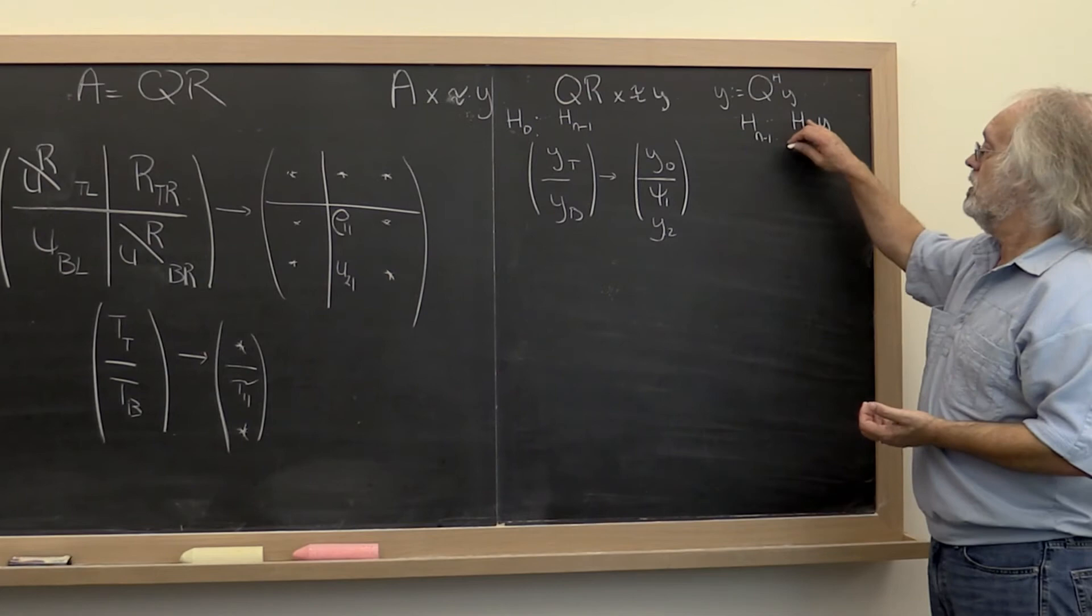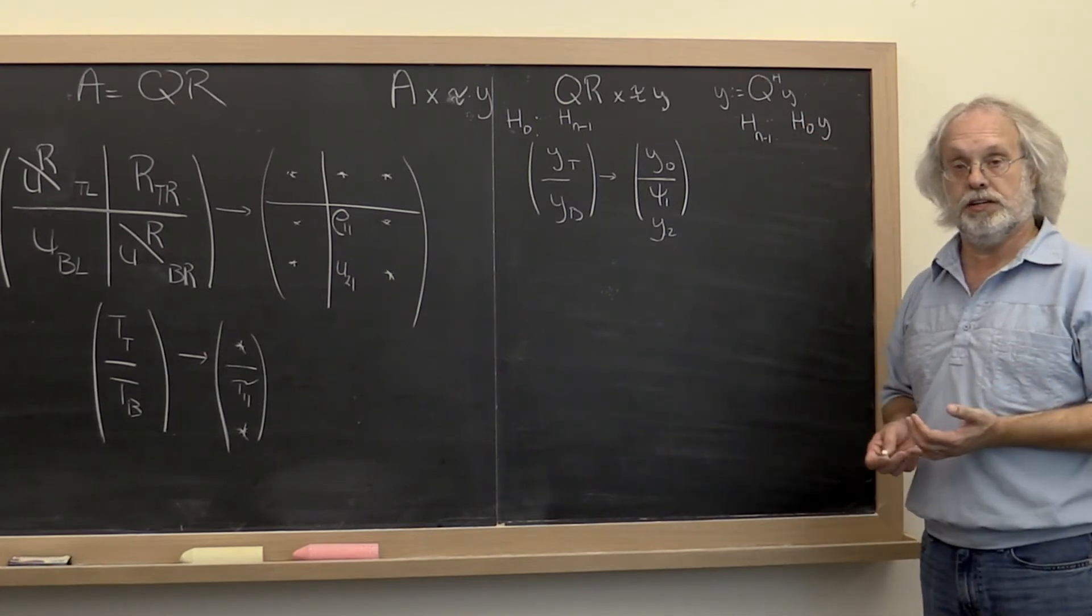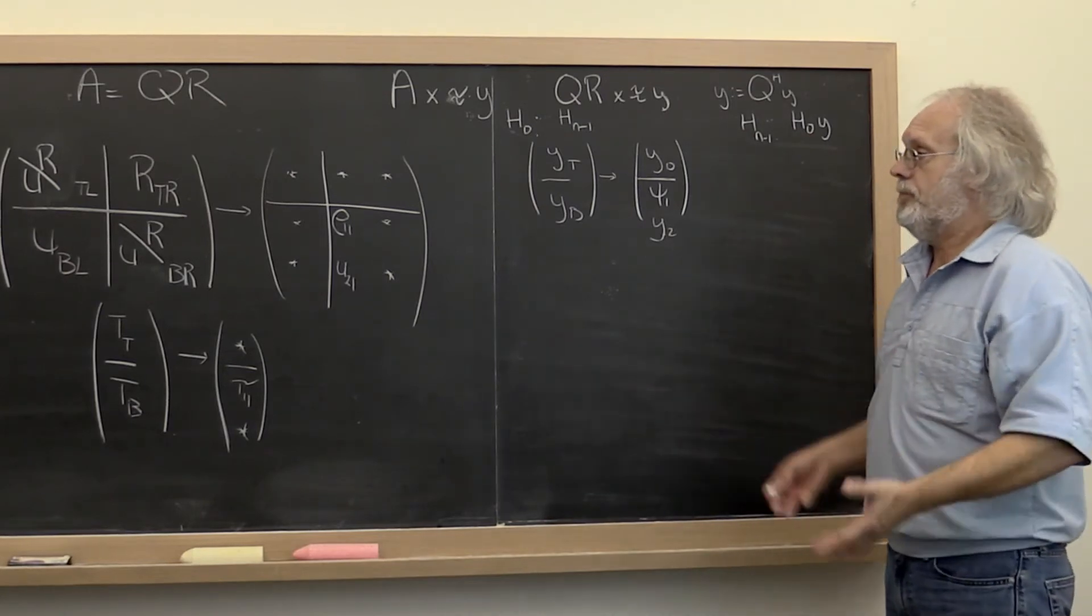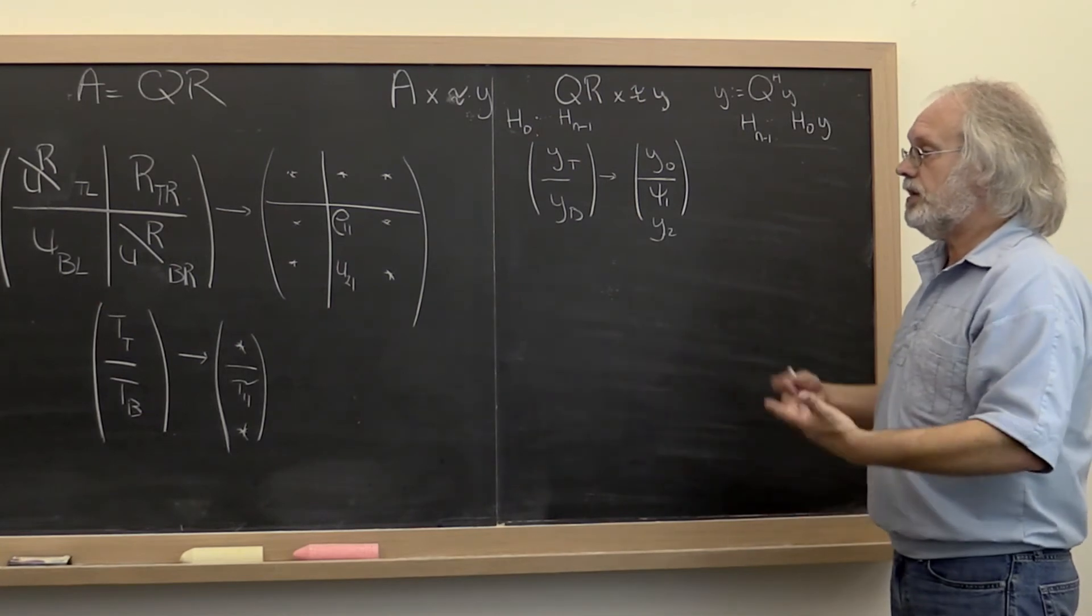And remember, the Hermitian transpose of a Householder transformation is that Householder transformation. So let's have a look at a typical step in that process.